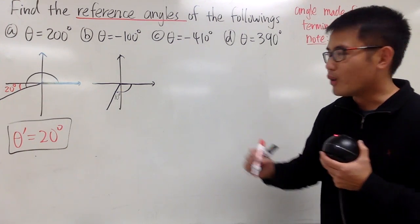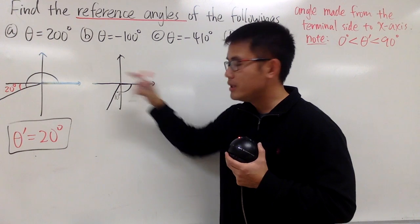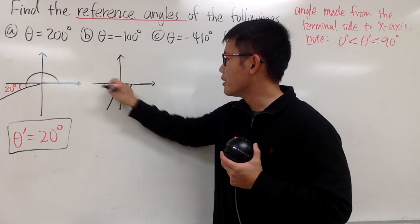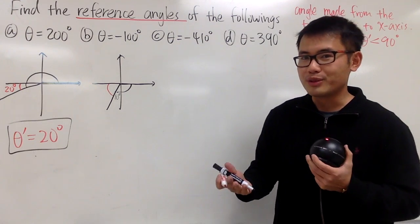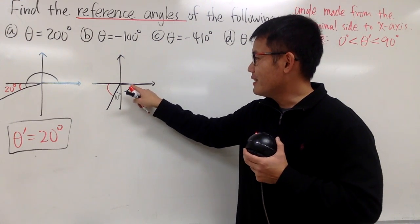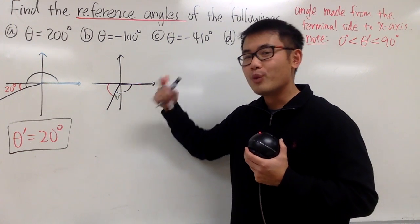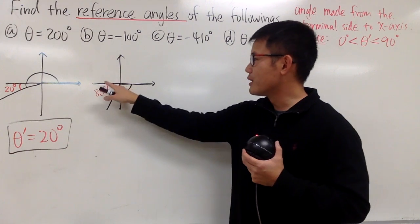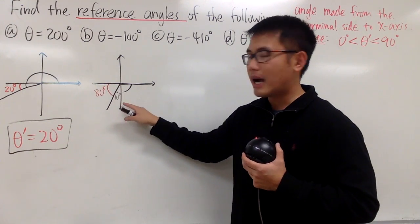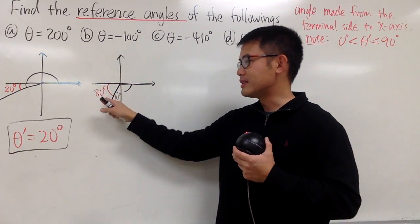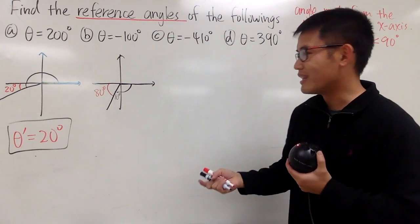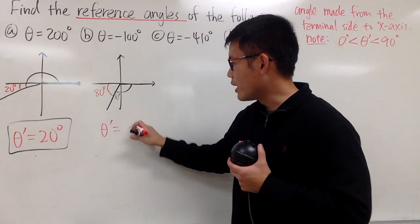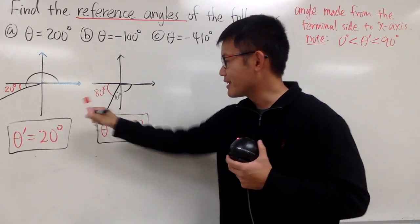Remember, the reference angle is from the terminal side to the x-axis, so we care about this angle here. You can do it a couple of ways: the whole thing was 180, so 180 minus 100 gives 80 degrees. Or, this part has to total 90, and this is 10 already, so this has to be 80. Either way, theta prime — the reference angle — is positive 80 degrees.